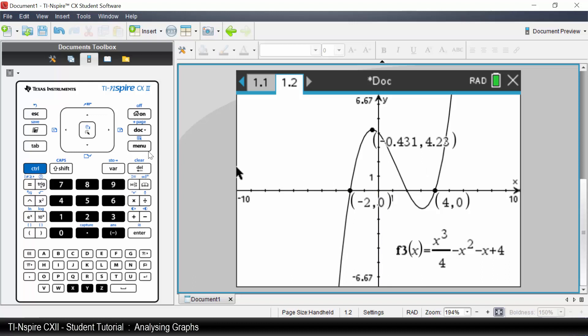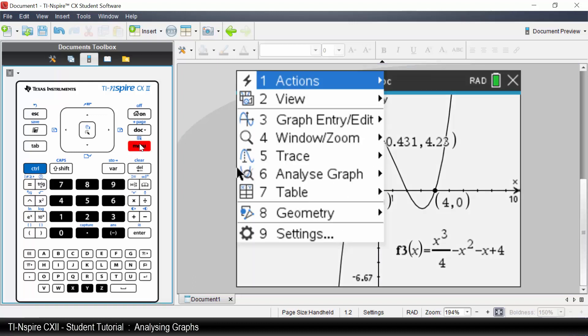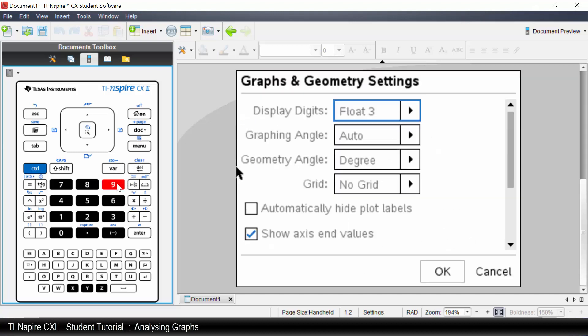Press Menu. Select Settings. You will see the display digits is 3. You can modify this to suit your needs. Press Escape.